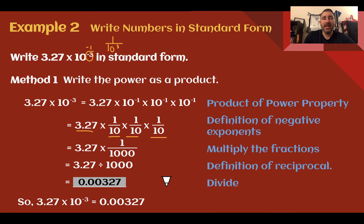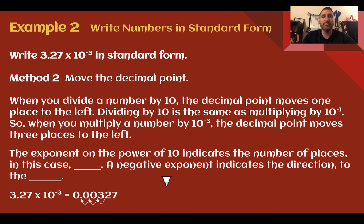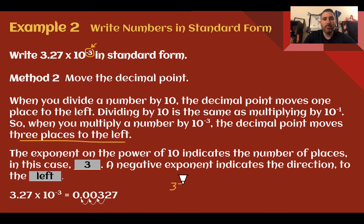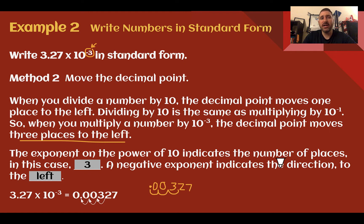Now with method 2 — moving the decimal point — when we're dividing by 10 as indicated by the negative exponent, you move your decimal point to the left. For 10 to the negative 3, that means moving 3 places to the left. Take our factor 3.27 and move the decimal 3 places to the left. Make sure you put your decimal place in before you put your zeros as placeholders, because when the number is less than 1, the decimal point becomes super important. So we get 0.00327.